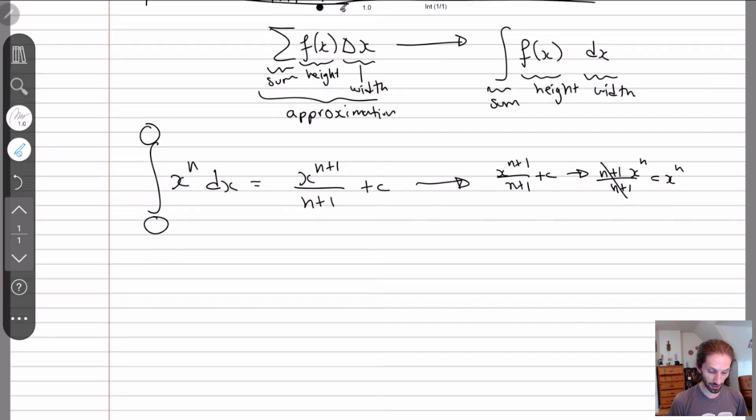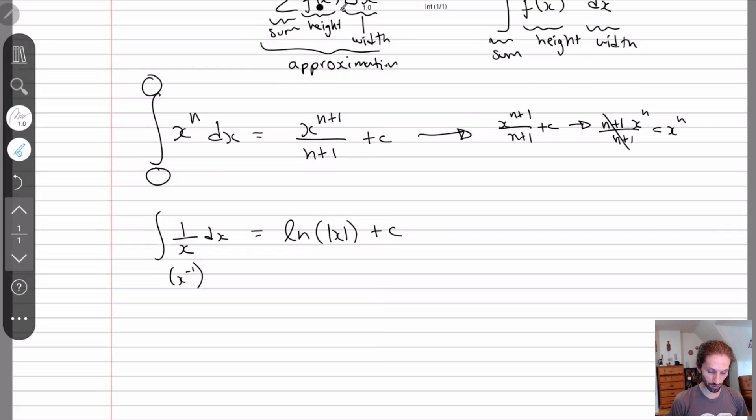Here, this n works for every n except for one n. The only n this doesn't work for is x to the minus one. And in this case, what we basically have is the natural log of x. So this is one formula, like these formulas, you should kind of be used to doing things.